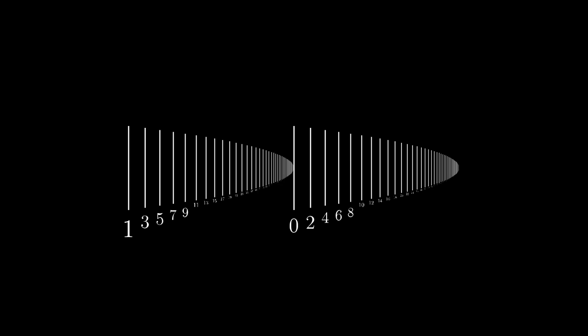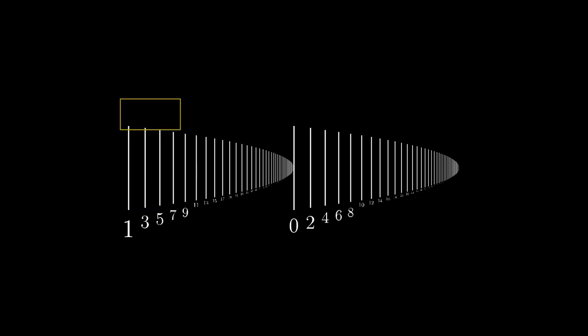Given any well-ordered set, we use transfinite recursion and build the appropriate ordinal number by repetitive application of the axiom of replacement. In every step of the recursion, we consider an initial segment of the well-ordered set and transform it into the appropriate set of ordinal numbers. So we start with an empty initial segment.